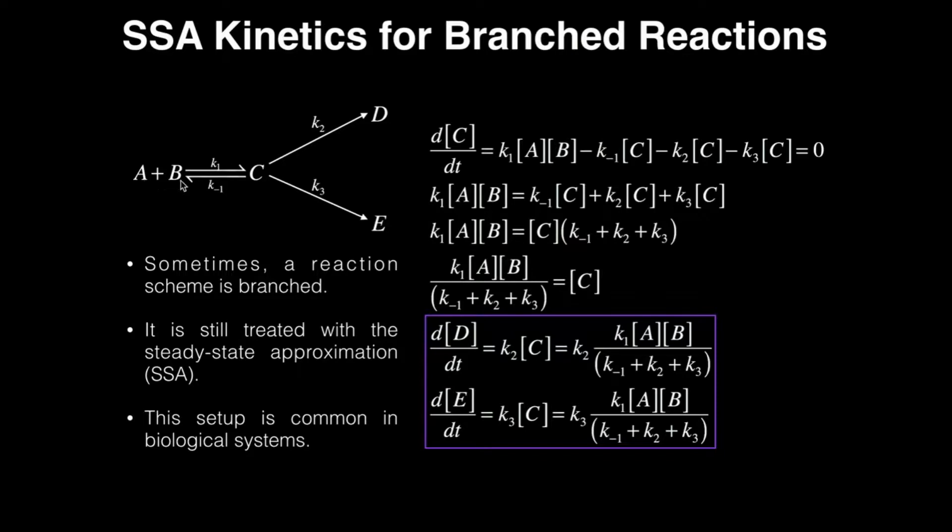Alright, so here's our setup. We've got two substrates or reactants A and B are in equilibrium with some molecule C. It's an intermediate. The equilibrium is described by K1, the forward reaction, and K-1, the reverse reaction.